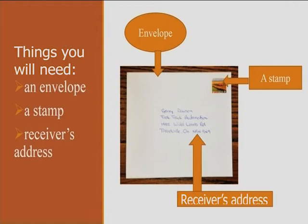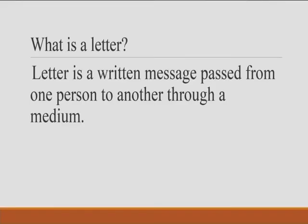Now, let us see what things you will need in order to send your letter. First, you need an envelope. Then, can you see at the right-hand corner of the envelope? That is a stamp. Then comes the receiver's address — you can see it written on the envelope, on the cover. That is the receiver's address.